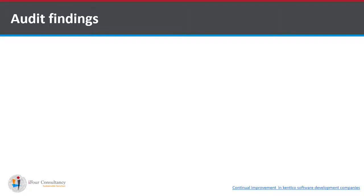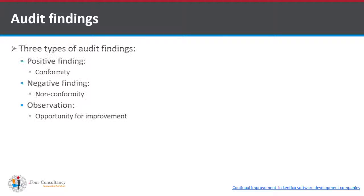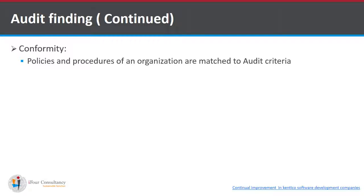So what are audit findings? Audit findings are the results which are brought out from auditing. There are three types of audit findings: positive, negative, and observation. A positive finding is conformity, a negative finding is non-conformity, and an observation is an opportunity for improvement.